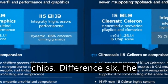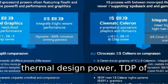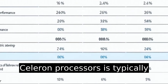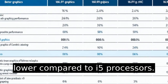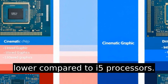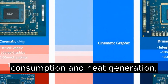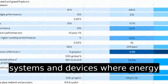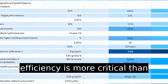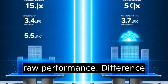Difference six: the thermal design power (TDP) of Celeron processors is typically lower compared to i5 processors. This reflects their lower power consumption and heat generation, making them ideal for budget systems and devices where energy efficiency is more critical than raw performance.